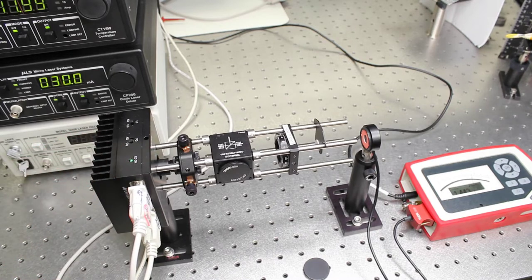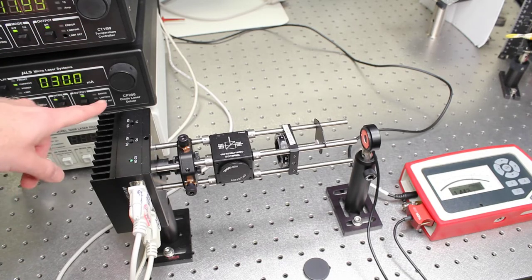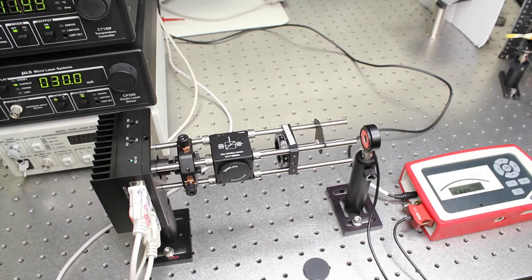It's in a temperature-controlled box. So there are basically two things to set about the laser. One is the temperature, which is set by this top box. And one is the current through the laser diode, which sets the brightness of the laser. It's controlled by this bottom box.